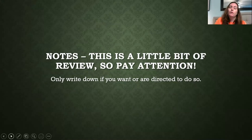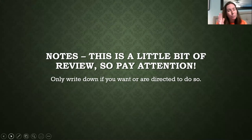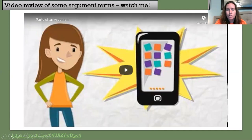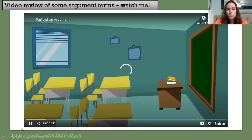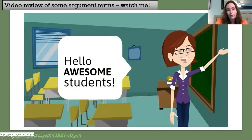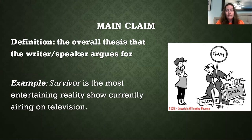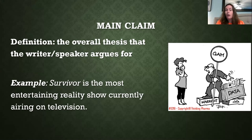This next part is a little bit of review. Last week we reviewed these argument terms, and we always embed those in the next week to make sure you remember them. There's a quick two-to-three-minute video reviewing some of our terms — parts of an argument — but we're going to be focusing on main claim and reasons/subclaims. The main claim for an argument is the overall thesis — it's what the writer or speaker is actually arguing for.